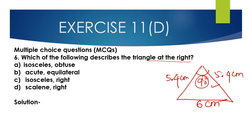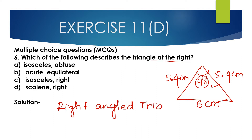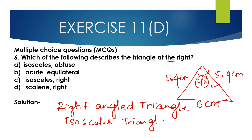In this given triangle, one of the angles is 90 degrees, so this is a right angle triangle. And in this triangle, two sides are equal, so that is an isosceles triangle. So it is an isosceles and right angle triangle. Option C is the correct option.